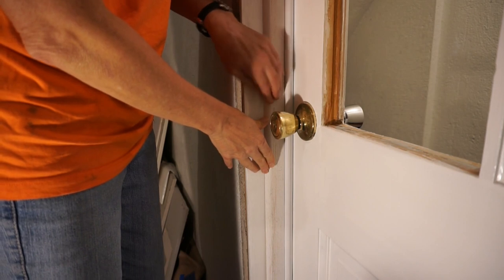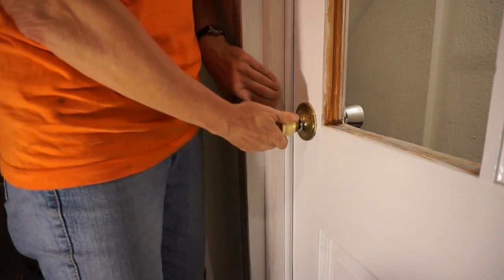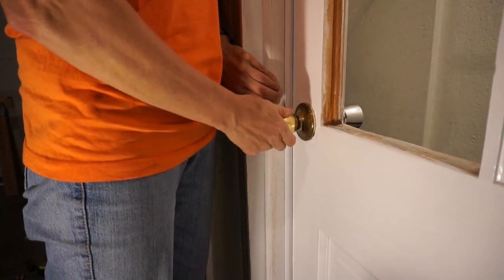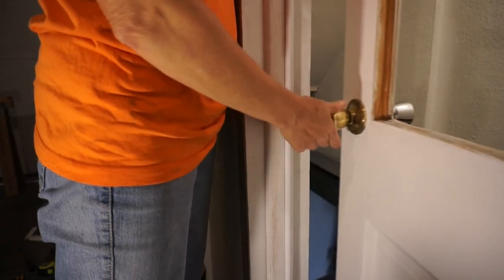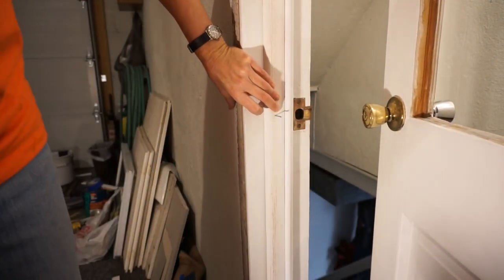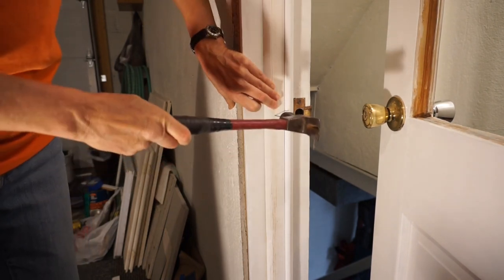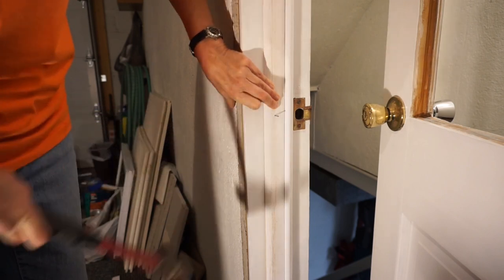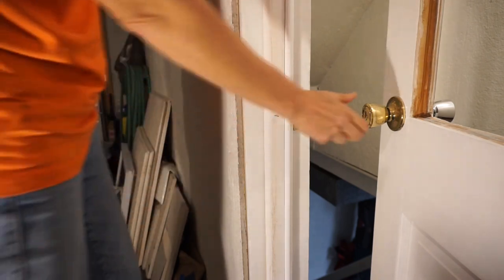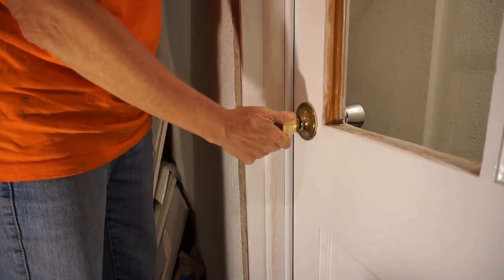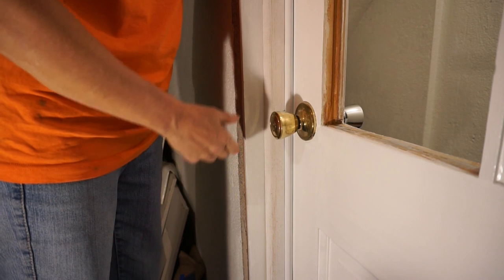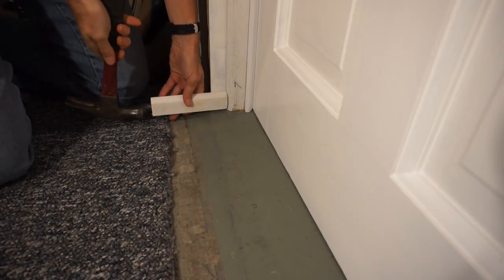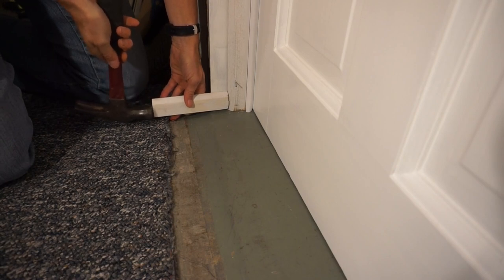Adjust the molding so that the weatherstrip slightly compresses against the door. Adjust the nail in a bit and test the fit. When satisfied with the fit, repeat this process with the bottom and top nail.